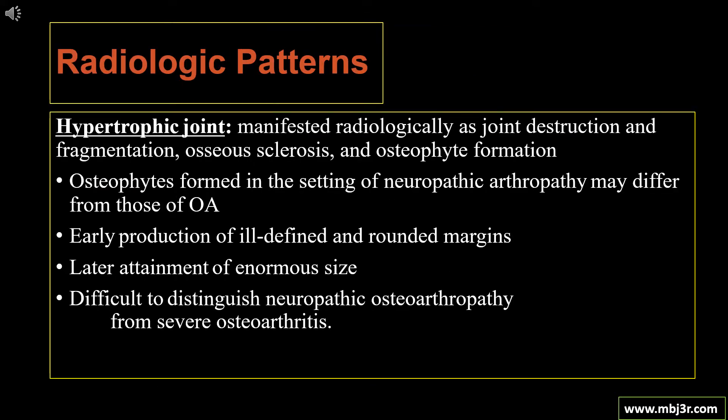Radiologically there are two types: hypertrophic and atrophic. The hypertrophic joint is manifested radiologically as joint destruction, fragmentation, osteosclerosis, and large osteophyte formation. Osteophytes formed in the setting of neuropathic arthropathy may differ from those of osteoarthritis by early production of ill-defined and rounded margins, and later attainment of enormous size, making it difficult to distinguish neuropathic osteoarthritis from severe arthritis in some cases.